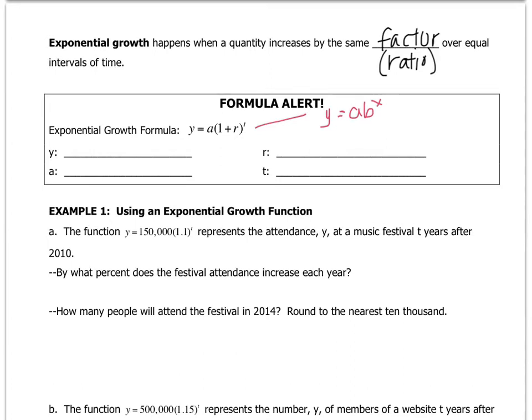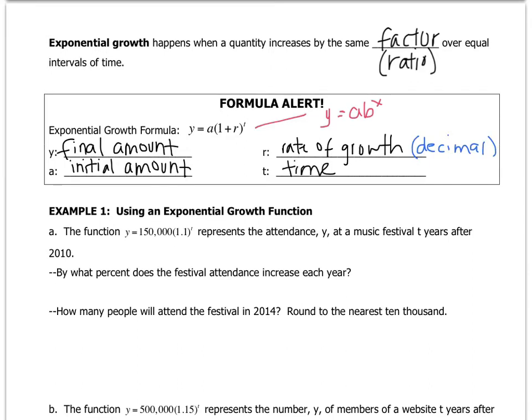And I'll explain what that means as we go through our variables. Y in our formula stands for the final amount. A stands for the initial amount, also known as the starting amount. R stands for the rate of growth. The one rule is that this must be in decimal form. And t stands for time. And it's typically in years.